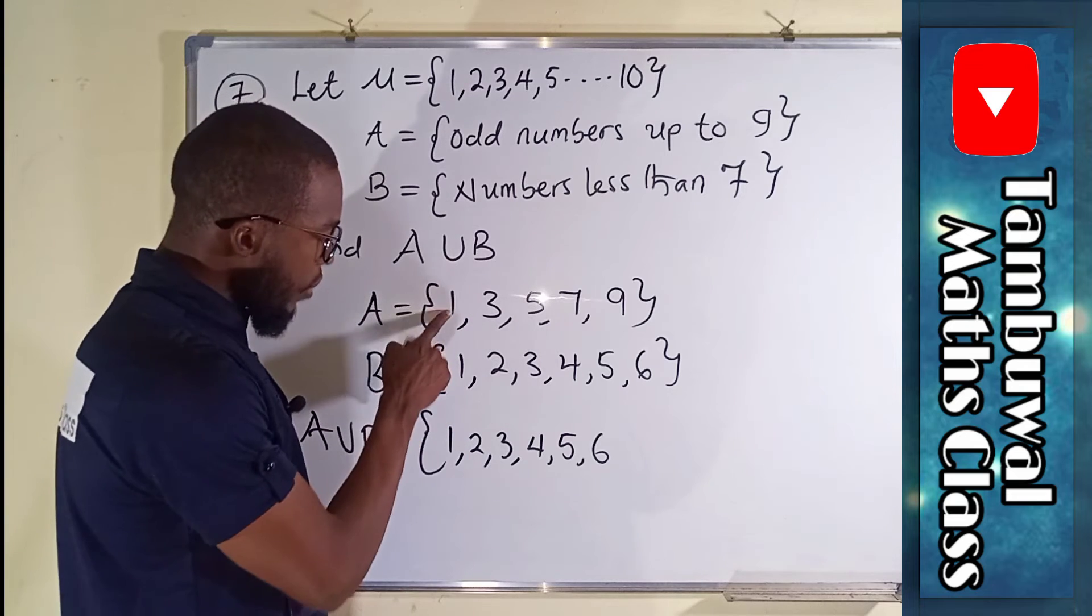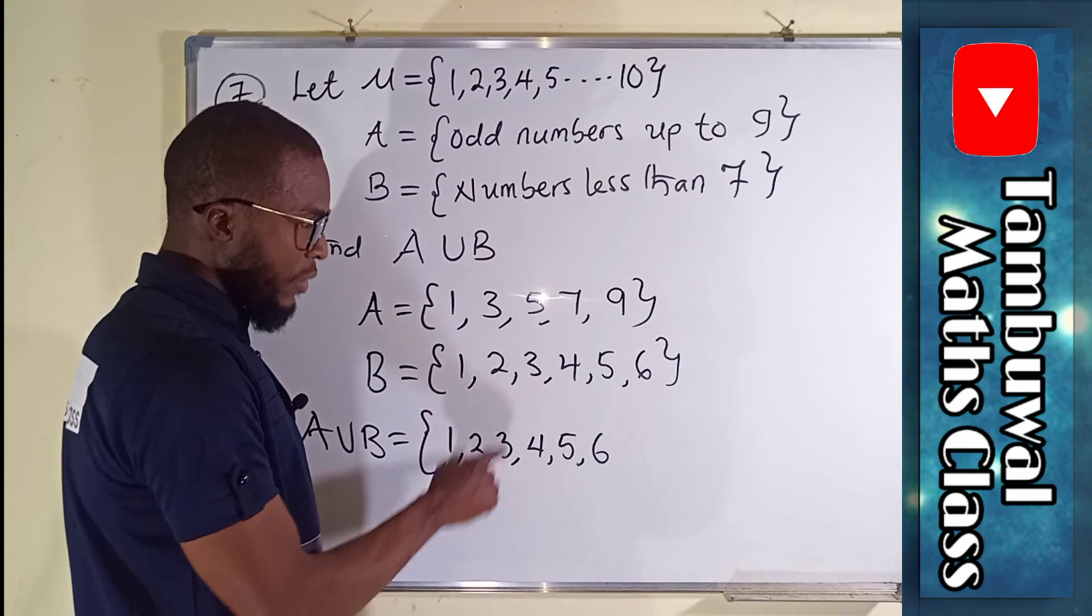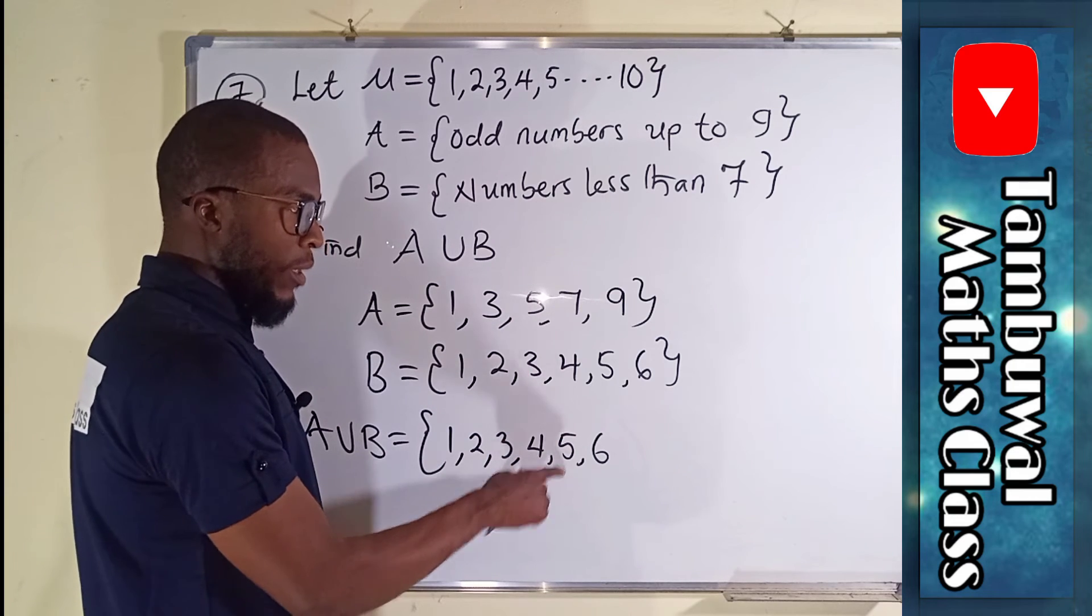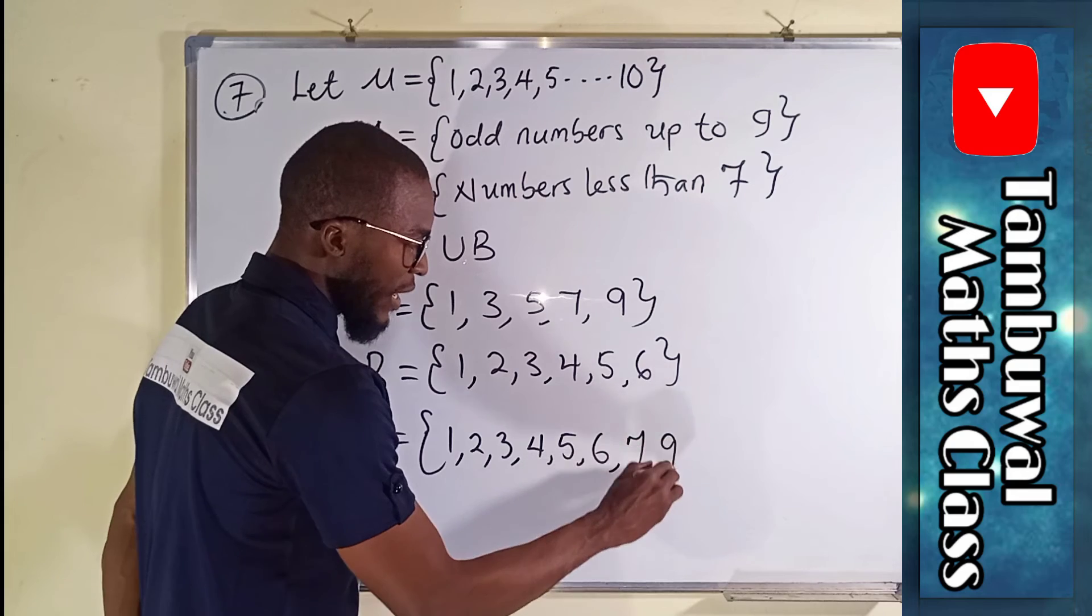Then we join the remaining set. One is already here, three is already here, five is already here. We have seven and we have nine finally.